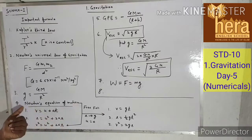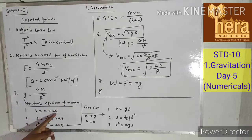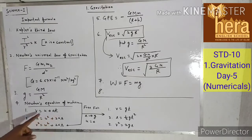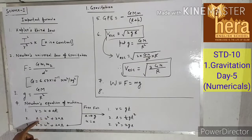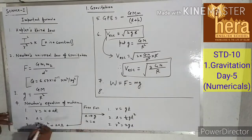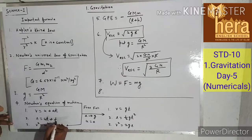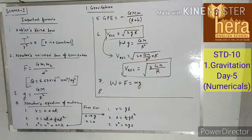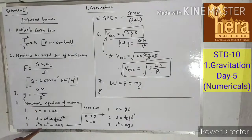Newton's equations of motion: The first equation is v = u + at. The second equation is s = ut + ½at². The third equation of motion is v² = u² + 2as.